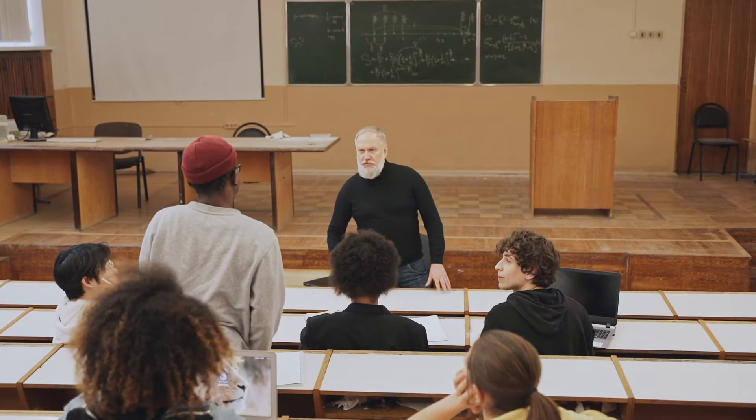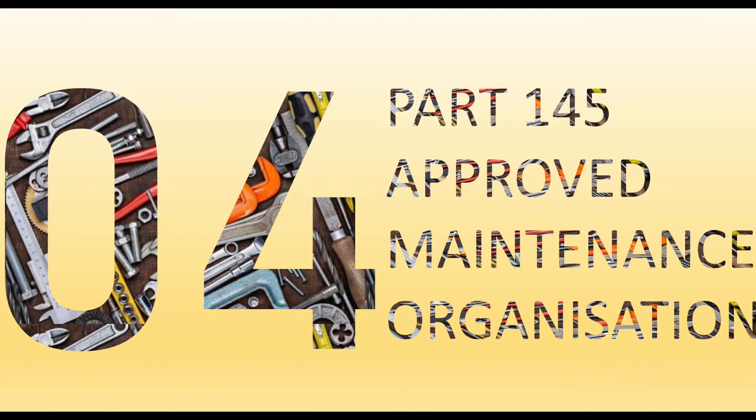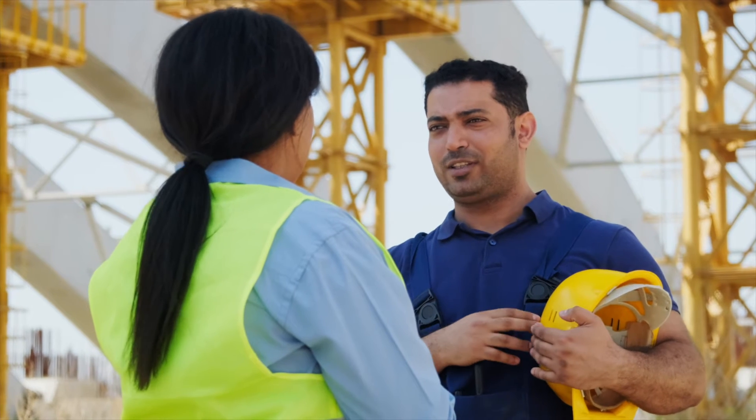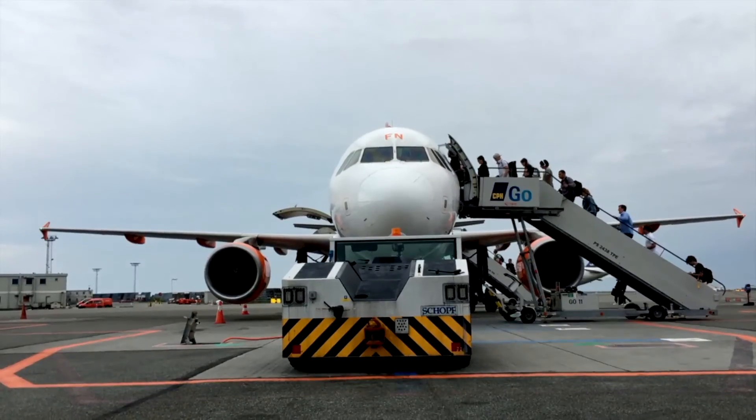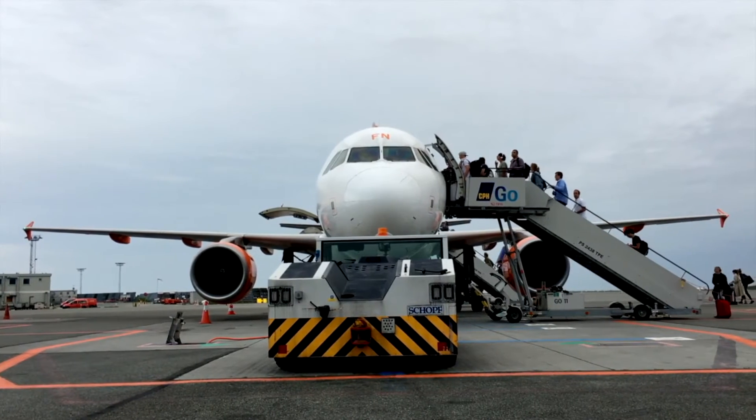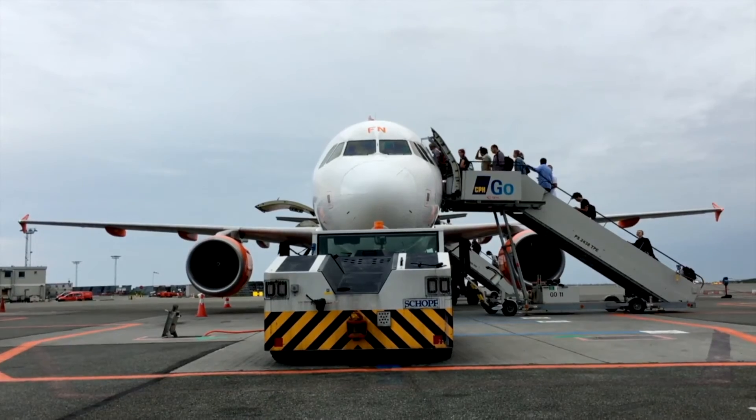Now we have an aircraft, competent people, and a training school. The next thing we need is a space for these people and that aircraft to work under one roof. This is called Part 145 — an Approved Maintenance Organization. A Part 145 organization carries out maintenance from heavy checks to C-checks. A subsidiary of Part 145 is also line maintenance, where certifying staff with a category A license work on the aircraft on the line.